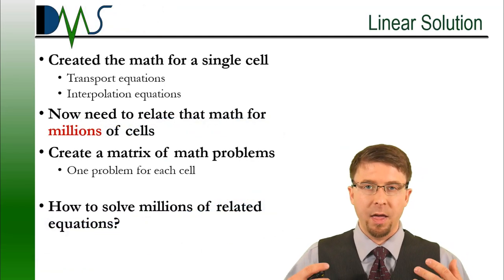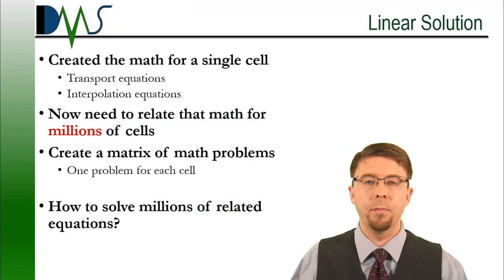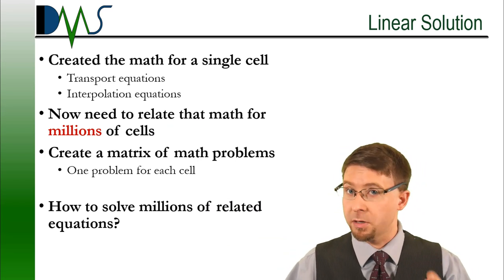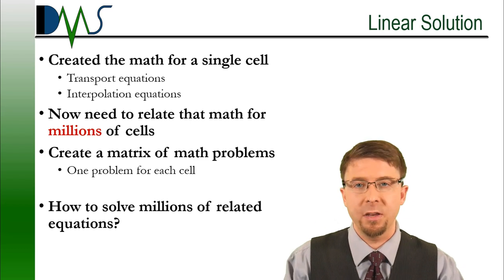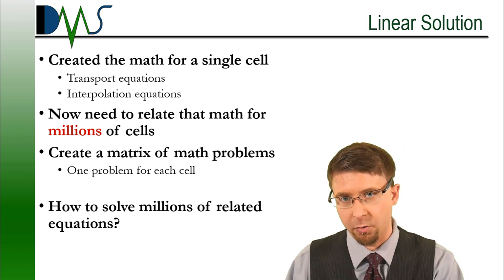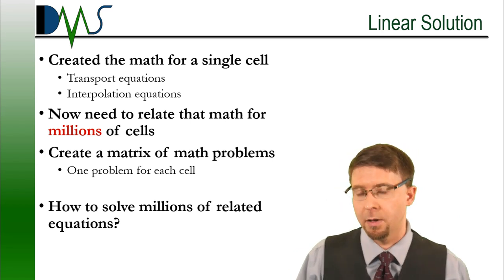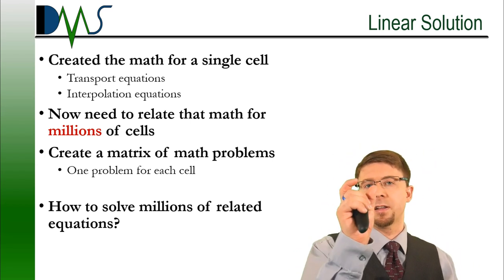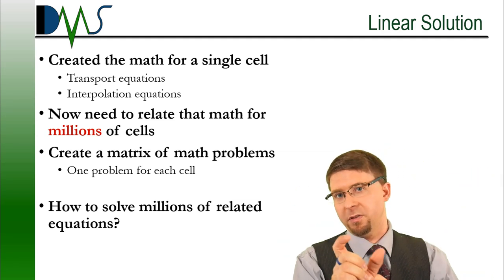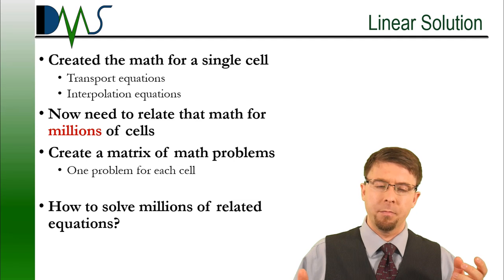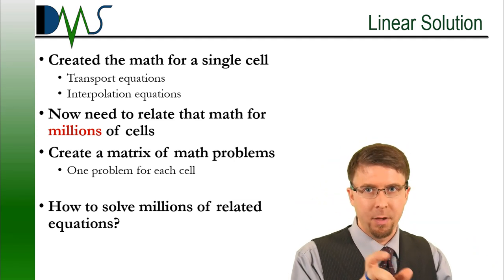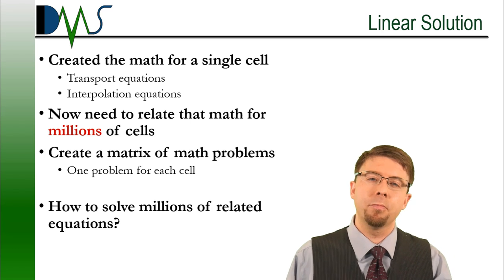Up to this point, everything that we have talked about has created the math for a single cell. We've had the transport equations, that's our Navier-Stokes and other equations, and we've had the interpolation equations that converted calculus into algebraic equations that the computer can understand. And all of this has said that I've got a single cell, and I've got information that I'm getting from my neighboring cells. Well, there's a catch here. We actually know that we don't know the answers for all these neighboring cells either.